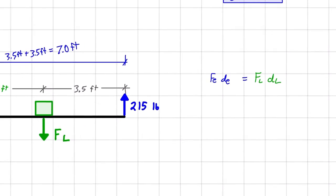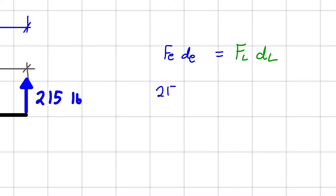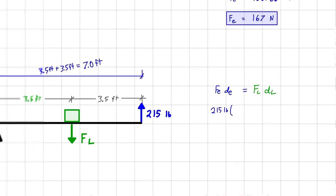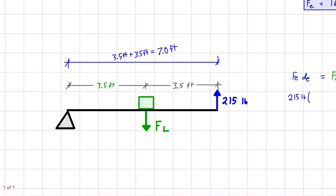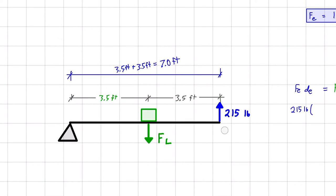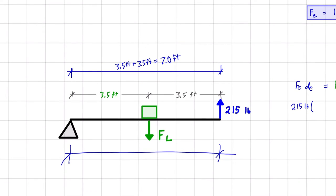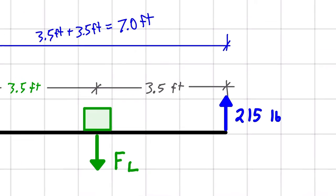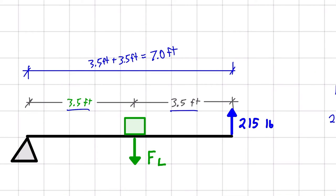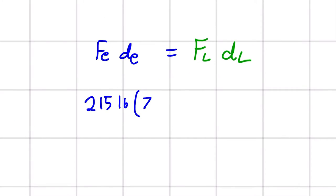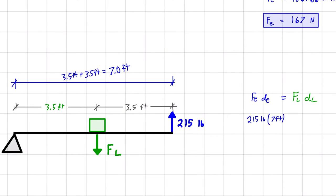And again, let's just start plugging in our values. So 215 pounds times De. So De, it's the distance from the effort to the fulcrum. And that's an important point to realize. It's the distance from the effort all the way to the fulcrum. So it's not just this value here. It's not from the effort to the load. It's the entire 3 feet plus 3 feet is equal to 7 feet. So the effort is applied 7 feet from the fulcrum.